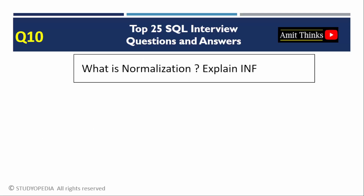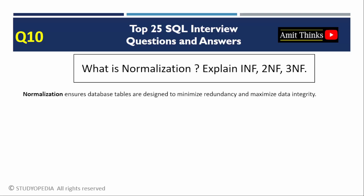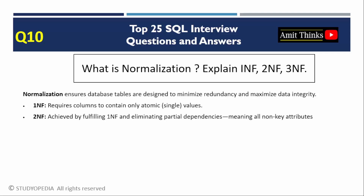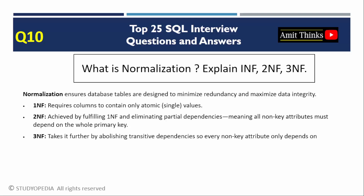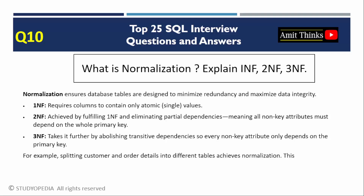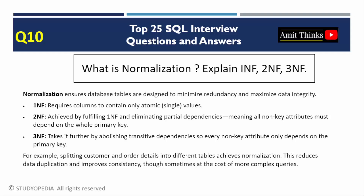Question 10: What is normalization? Explain 1NF, 2NF, and 3NF. Normalization organizes data to reduce redundancy and improve integrity. 1NF ensures atomic values. 2NF meets 1NF and removes partial dependencies. 3NF removes transitive dependencies. For example, split a table with customer and order details into separate tables. Normalization minimizes anomalies but may increase query complexity.